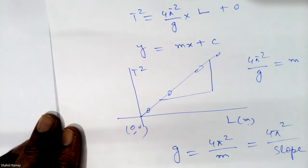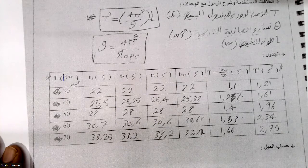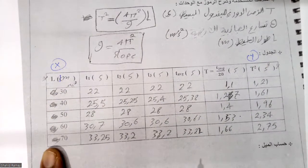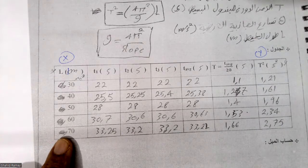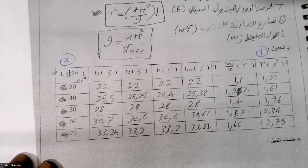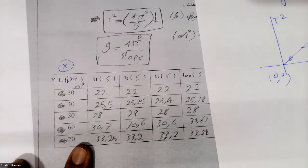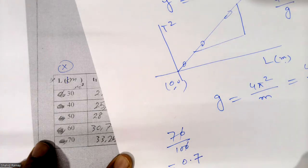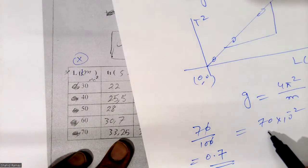Our goal in this video is to draw the graph. Looking at the data, the length side is our x-axis and T² is our y-axis. The maximum x value is 0.7 meter — because it is 70 centimeters and 70 divided by 100 equals 0.7. You can write this value either way depending on your style.